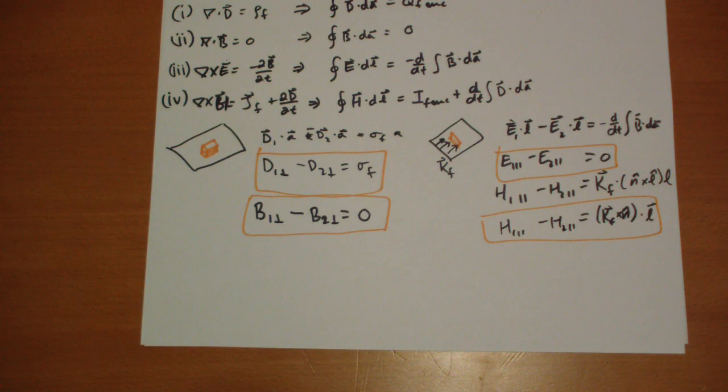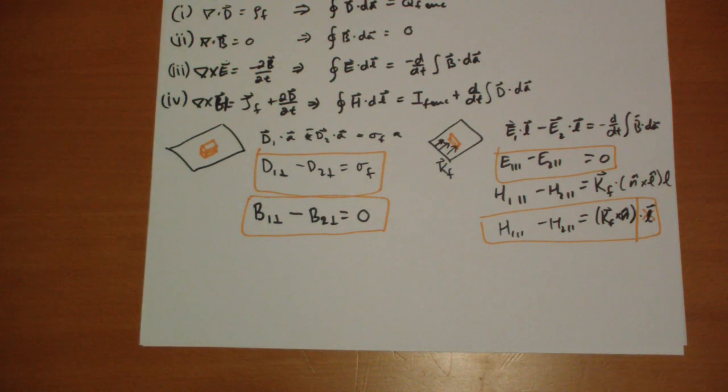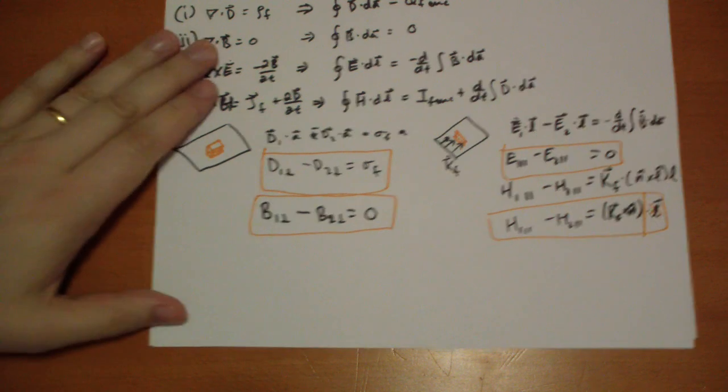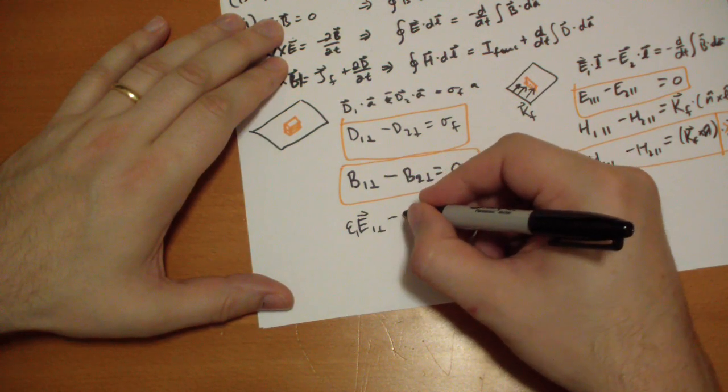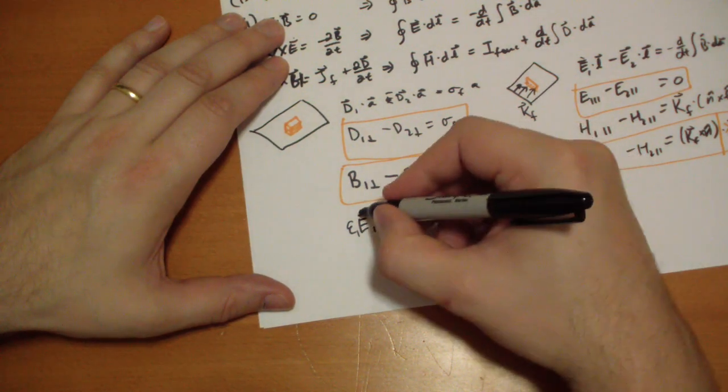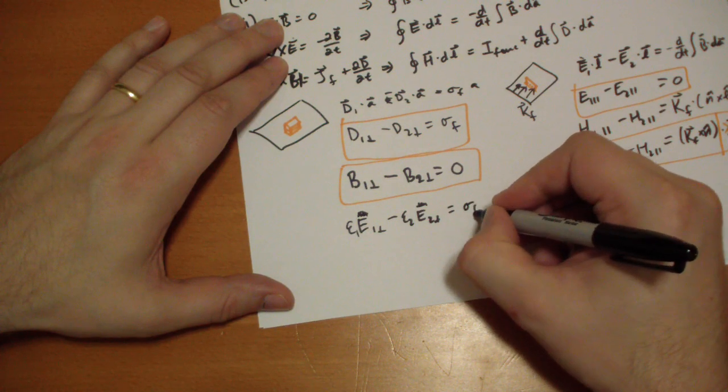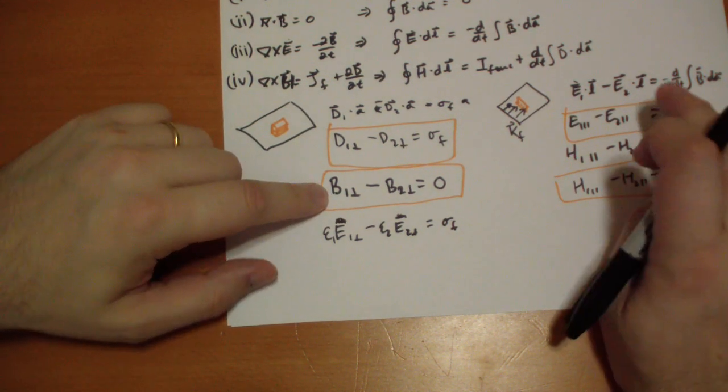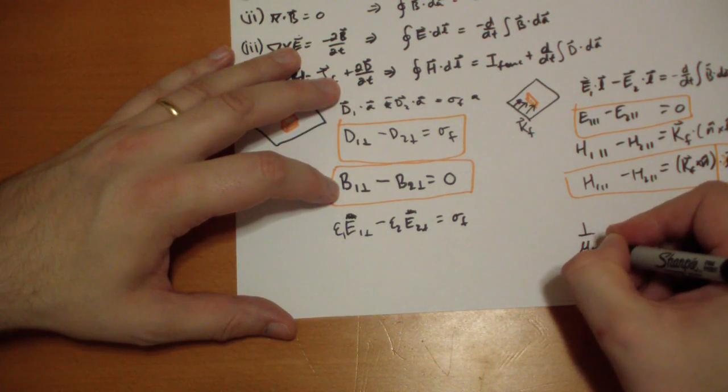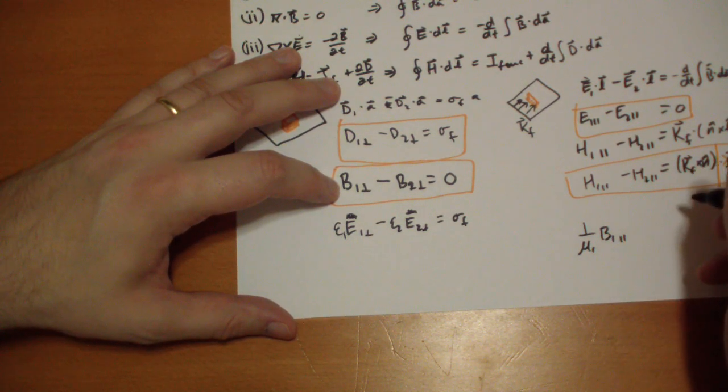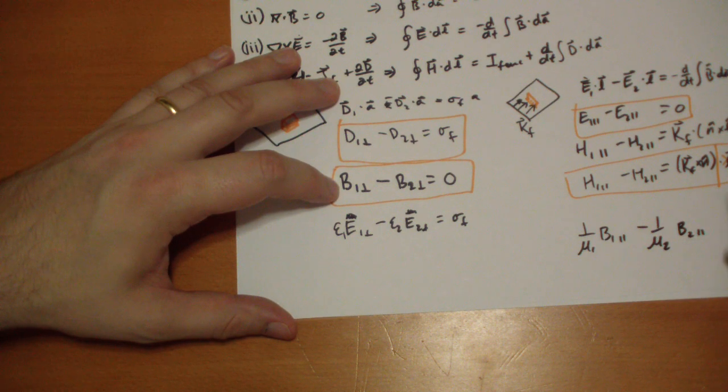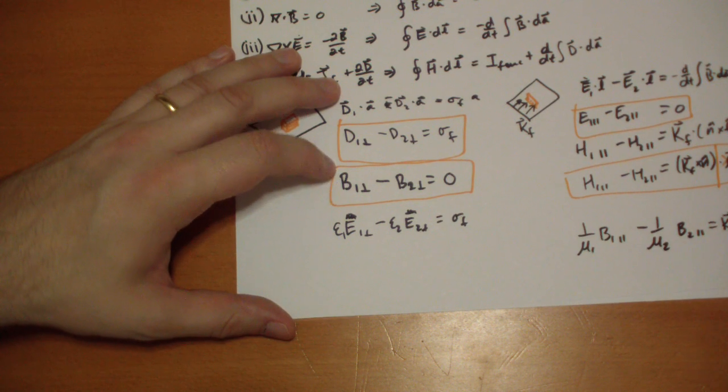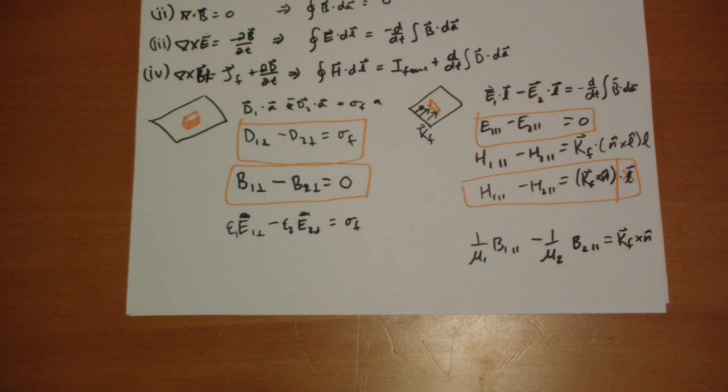In linear media, D equals epsilon E. So we have epsilon 1 times E vector above in the perpendicular component minus epsilon 2 of the material below equals the free surface charge. For B vectors we don't have that problem. For H vectors we do, so it's one over mu. The permeability of the top material times the magnetic field above in the parallel direction minus the permeability of the material below times the magnetic field parallel has to jump by n hat cross Kf vector.